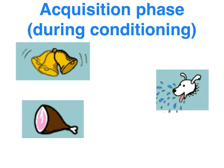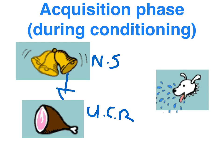During the acquisition phase, we pair the neutral stimulus — the sound of the bell — with the unconditioned stimulus, the meat. Seven pairings were required, and it evoked the unconditioned response. Critically, the neutral stimulus, the sound of the bell, has to be presented just before the presentation of the meat — a couple of seconds — otherwise the dog won't make the association between the sound of the bell and the food.